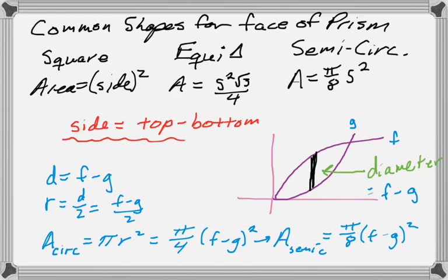And what I've written here is, I've written pi over 8 side squared again, because you can think of all of them in terms of side, where side is just top take away bottom, which in our picture was f minus g.